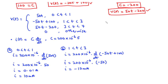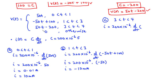For interval C, 3 less than t less than 4: I = 200 times 10 to the power negative 6 times d/dt of (50t - 200). Differentiating 50t gives 50, and -200 is a constant giving 0. Therefore I = 10 milliampere.